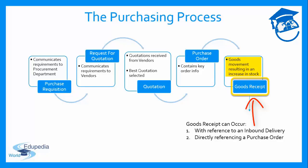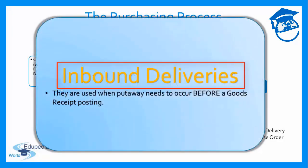When creating a goods receipt, we can either do so using an inbound delivery or without one. When using an inbound delivery, we are able to perform putaway before actually performing the goods receipt posting. Goods receipt can also occur without an inbound delivery, purely using the purchase order. The advantage of using an inbound delivery is that it allows putaway before goods receipt posting, which is generally more accurate as it reflects stock that is actually available and already put away.